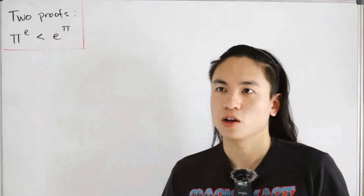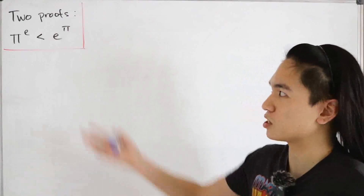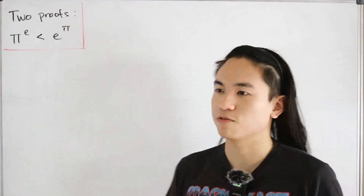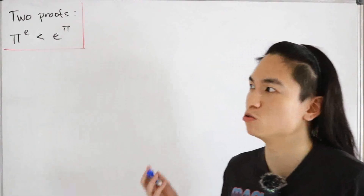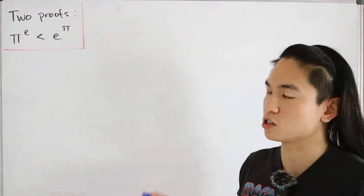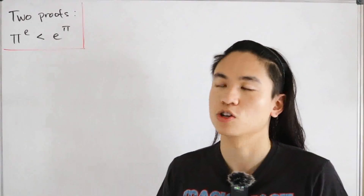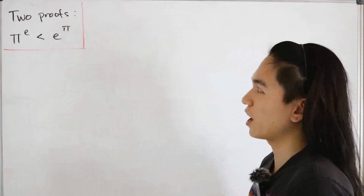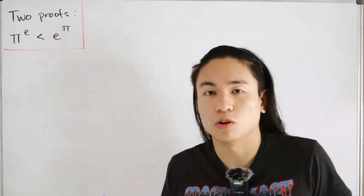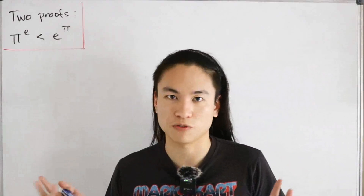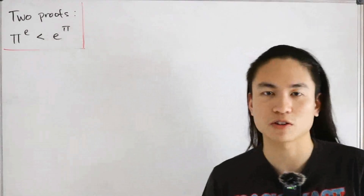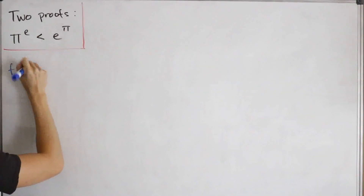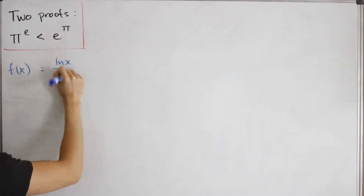The standardized proof is generic and can be applied to similar number comparisons — for example, comparing the square root of 2 to the cube root of 3, which actually comes from a Cambridge University entrance exam question. With that in mind, let's define our function f(x) as the natural log of x divided by x.